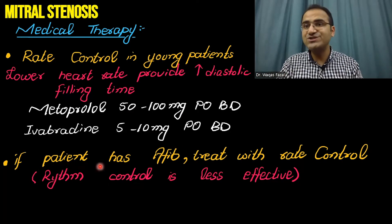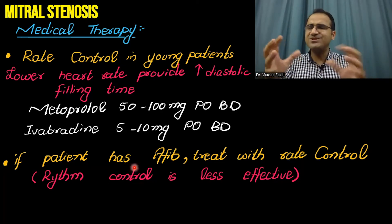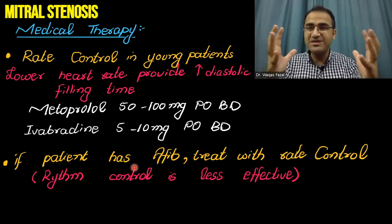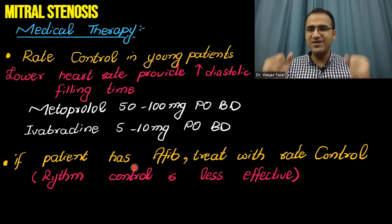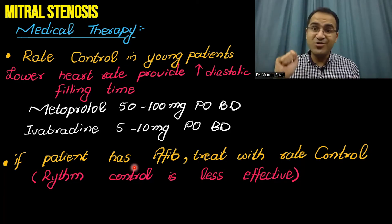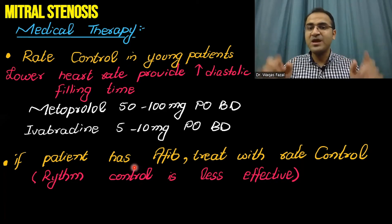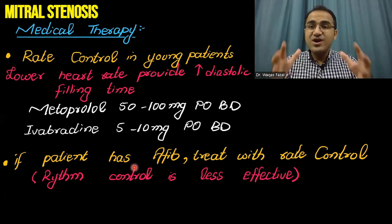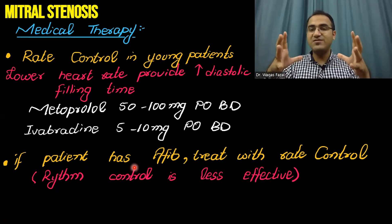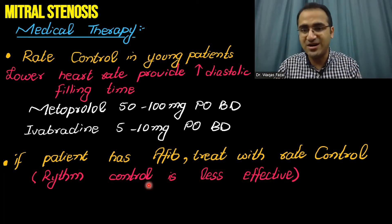Most patients presenting with mitral stenosis have an enlarged left atrium, and with a large left atrium there is a chance of irregularly irregular heart rate — they may have developed atrial fibrillation. You need to control that atrial fibrillation with rate control. Remember: in atrial fibrillation, if the cause is a structural change in the heart — as in mitral stenosis with left atrial enlargement — you should go for rate control, because rhythm control is less effective when there is structural change in the heart tissue.